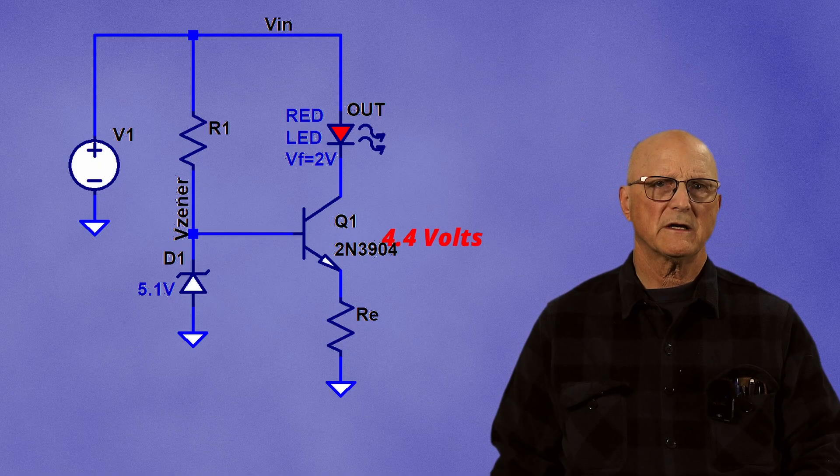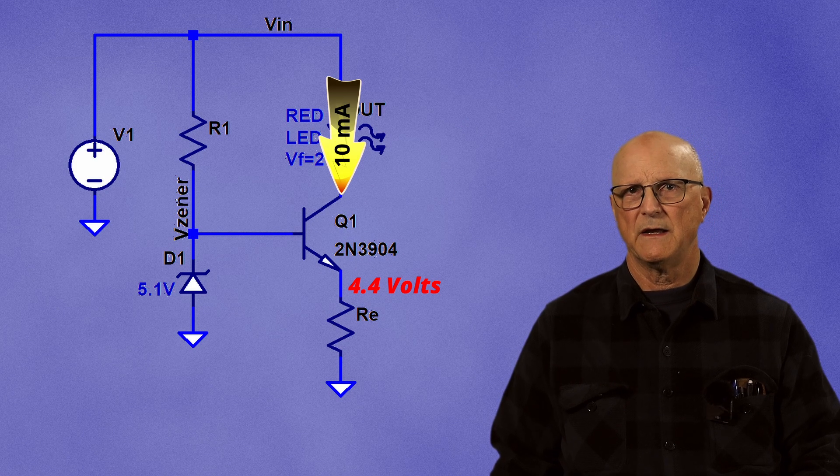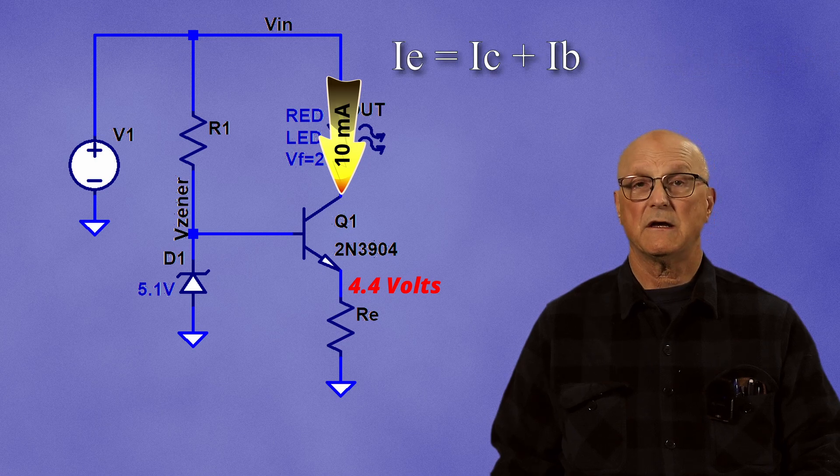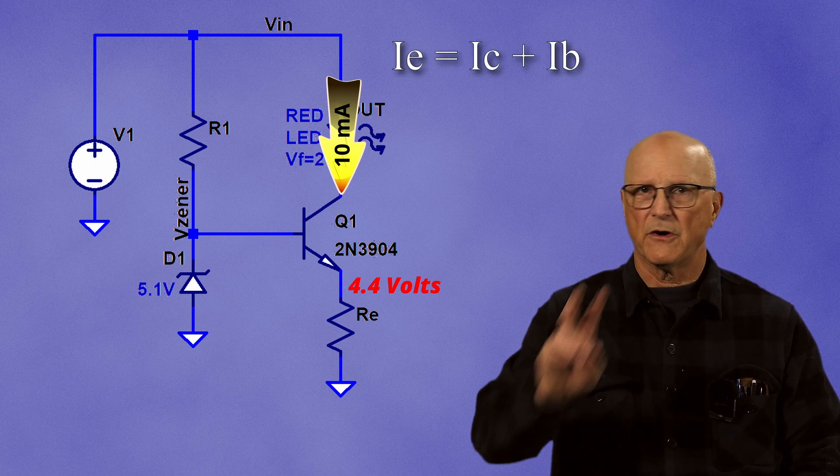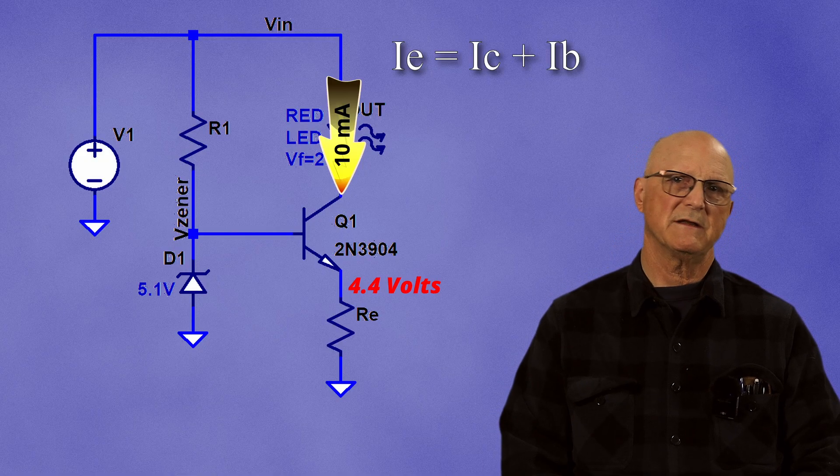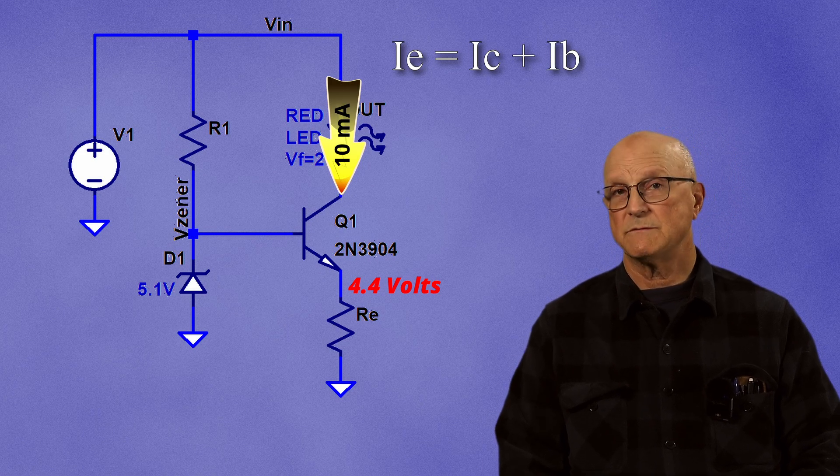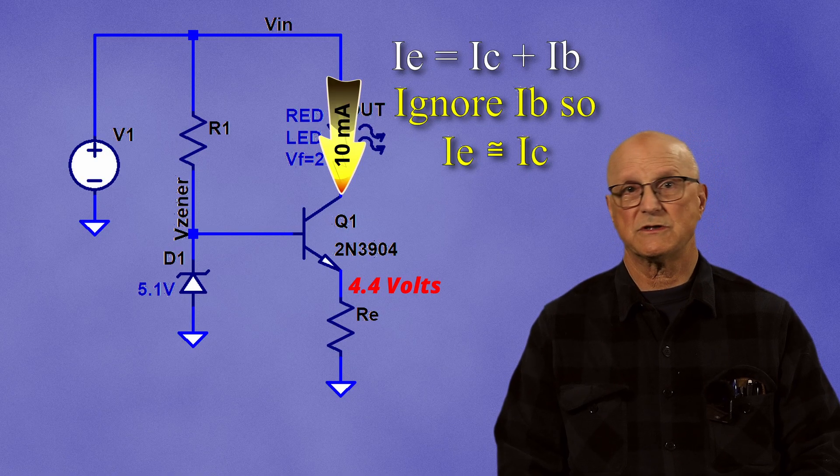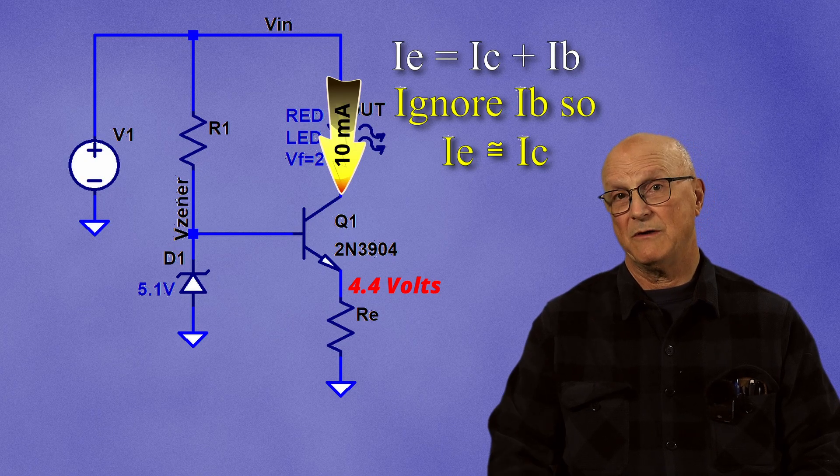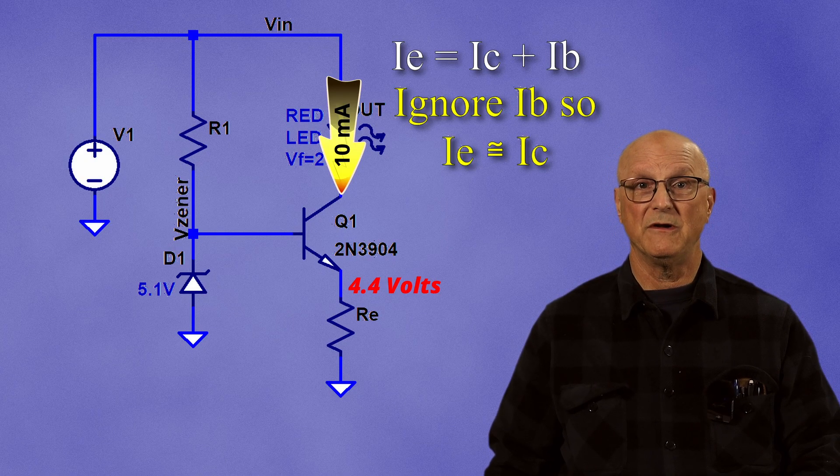Our target collector current is 10 milliamps. The emitter current is the collector current plus the base current. And there are two ways we could approach this at this point. In some circles, we would just assume that the emitter current is essentially the same as the collector current because the base current relative to the collector current is pretty small.